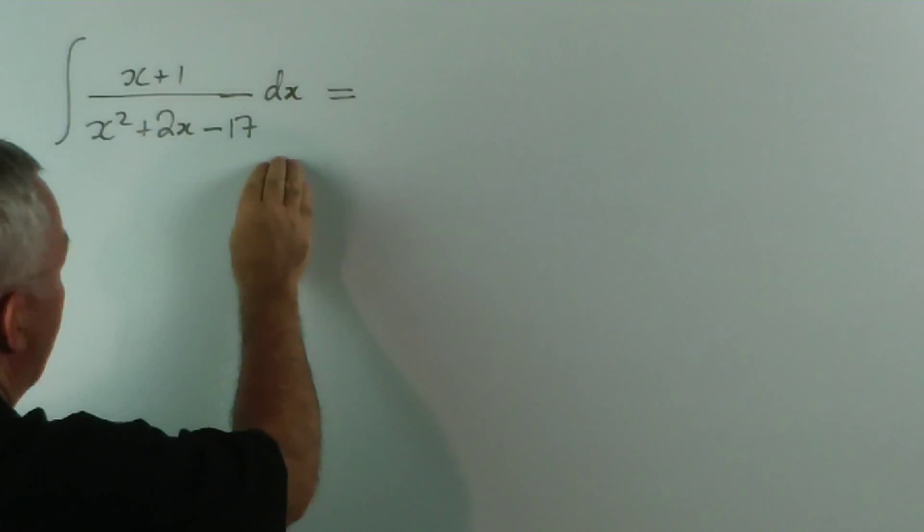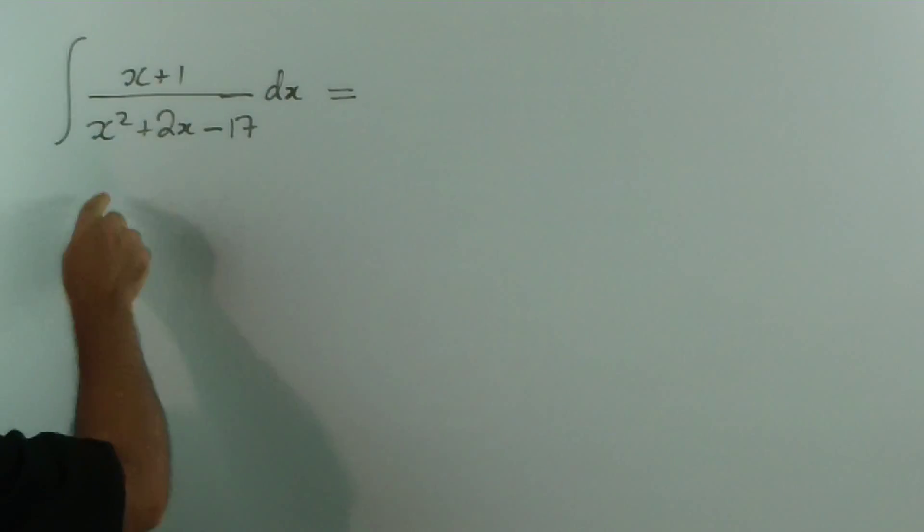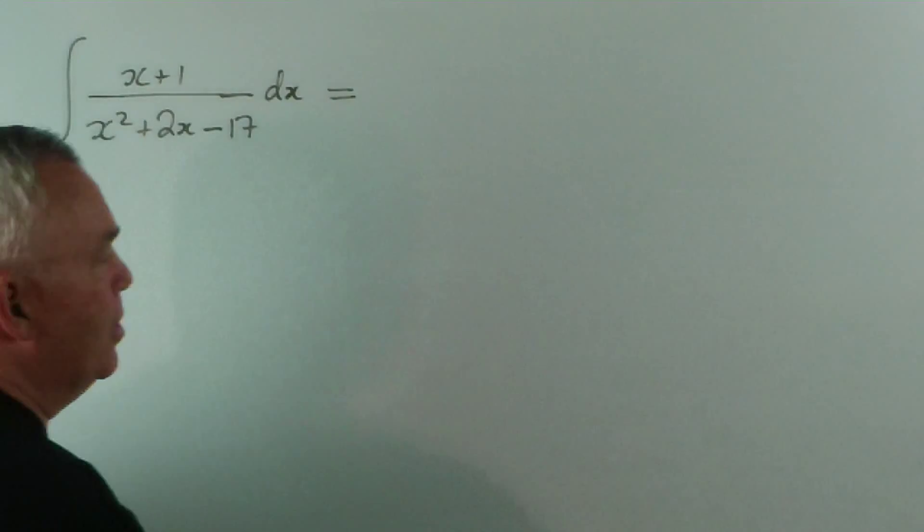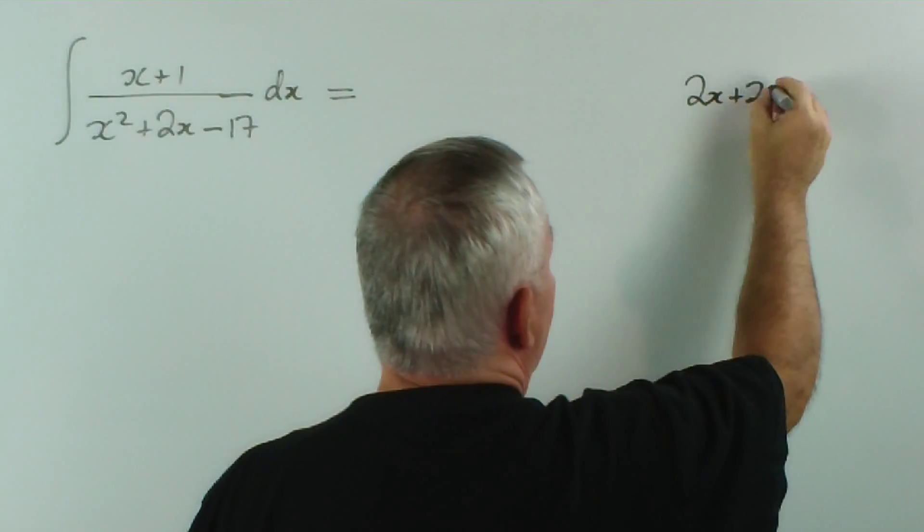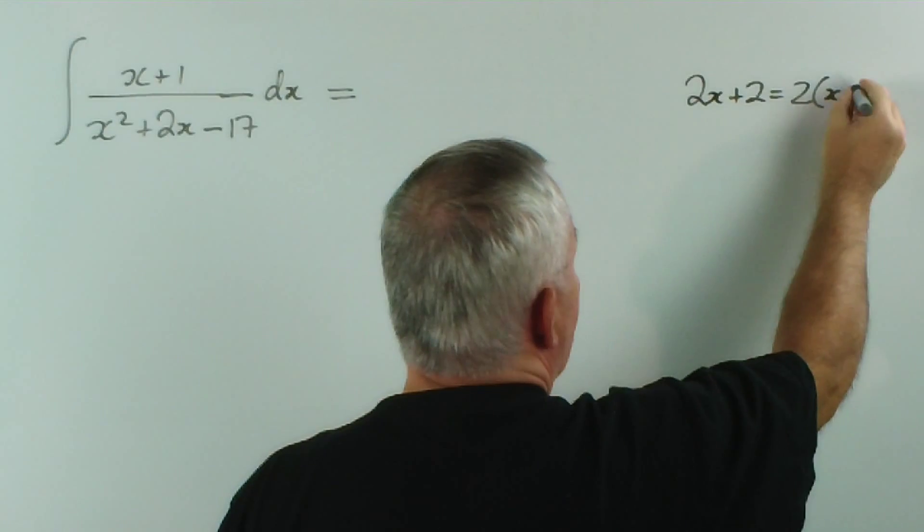What is the derivative of the function on the bottom? Well, the answer is it's 2x plus 2. Now, that's interesting. 2x plus 2 is two lots of x plus 1.